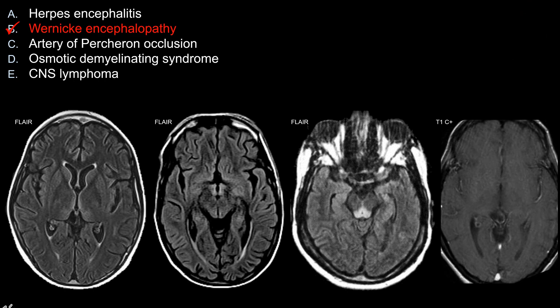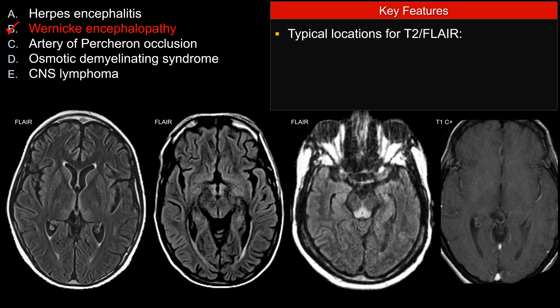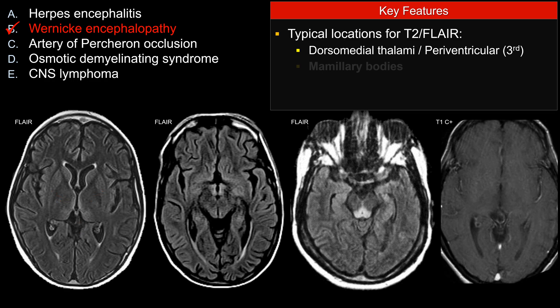The best choice here is choice B, Wernicke's encephalopathy. There are abnormal T2 FLAIR signals in the classic location that make one think about Wernicke's encephalopathy, particularly along the medial thalami as well as around the third ventricle. Another classic location is the involvement of the mammillary bodies. When I see abnormal signals here, one of the first things I think about is Wernicke's encephalopathy.